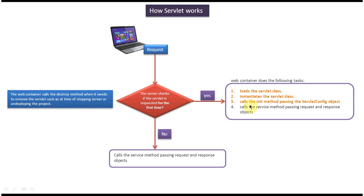After these three initialization steps, the web container will call the service method of the particular servlet instance by passing the request and response objects. If the servlet is requested for the second or third time, the web container will directly call the service method by passing the request and response objects, because the servlet is already initialized from the first request — initialization is not needed again.